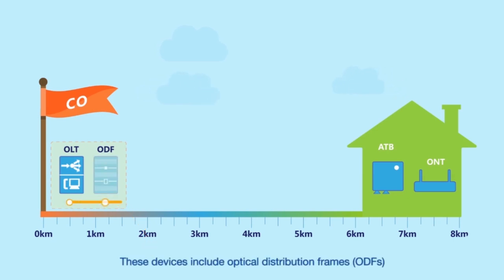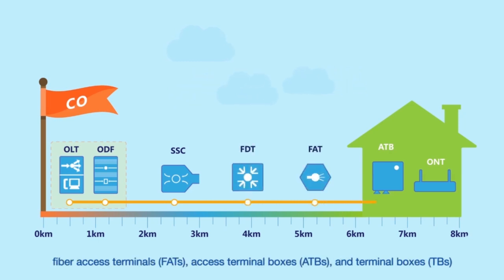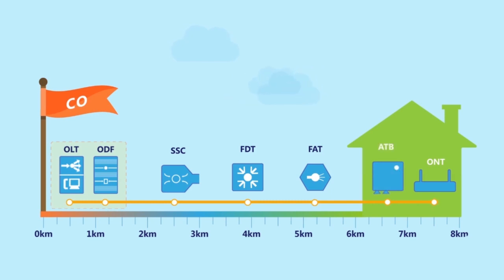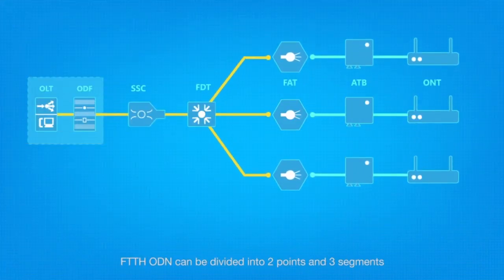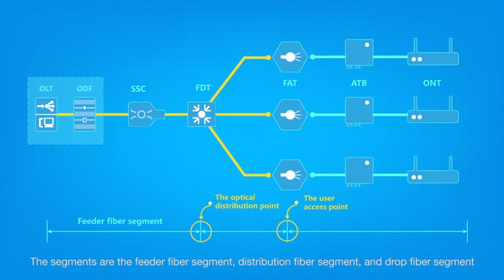ODN devices are deployed to extend these optical cables to users' homes. These devices include optical distribution frames, splitting and splicing closures, fiber distribution terminals, fiber access terminals, access terminal boxes, and terminal boxes. FTTH ODN can be divided into two points and three segments: the optical distribution point and the user access point; the feeder fiber segment, distribution fiber segment, and drop fiber segment.